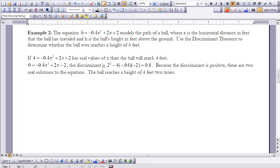Let's look at an example now that would model a real-world situation. So, we have the equation h equals negative 0.4x squared plus 2x plus 2, and it models the path of a ball where x is the horizontal distance in feet that the ball has traveled, and h is the ball's height in feet above the ground. Use the discriminant theorem to determine whether the ball ever reaches a height of 4 feet. So, we can go ahead and set our equation equal to 4. So, 4 equals negative 0.4x squared plus 2x plus 2 has real values of x. Then, the ball will reach 4 feet.